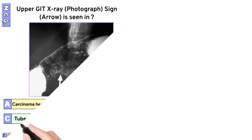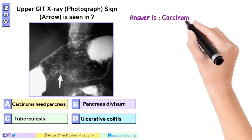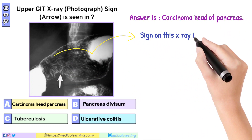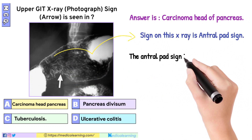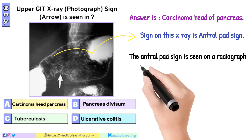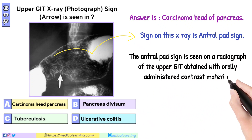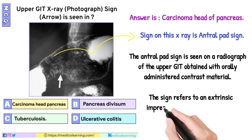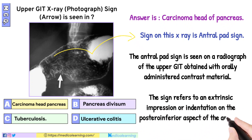In this question, the answer is carcinoma head of pancreas. The sign on this X-ray is the antral pad sign. The antral pad sign is seen on a radiograph of the upper GIT obtained with orally administered contrast material. The sign refers to an extrinsic impression or indentation on the posterior inferior aspect of the antrum.